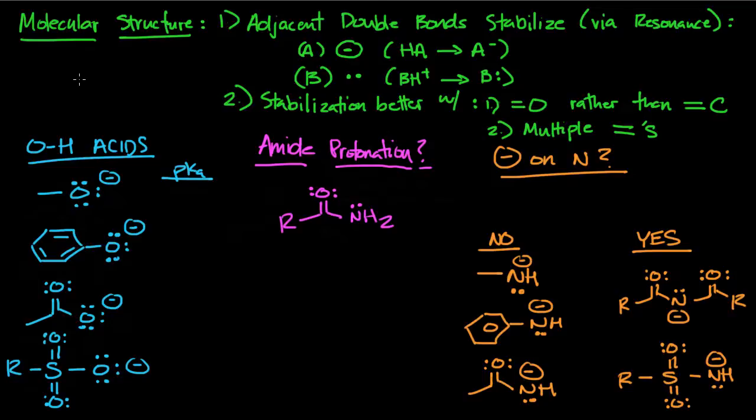The thing I like to focus most on is your adjacent double bonds, because what they're going to do is via resonance they'll stabilize electrons. This electron comes in one of two forms. You have the negative charge, which happens with HA becoming A-, or you just have an electron pair that's present on the base, so BH+ becoming B.